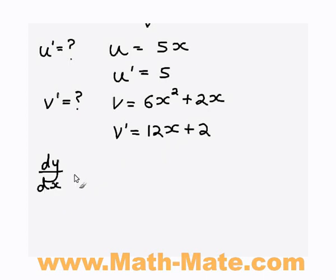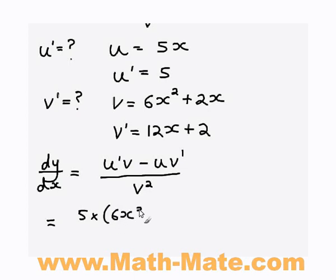So now we can go back to our original Quotient Rule, which is dy/dx equals u dash v minus u v dash on v squared. So we know u, we know v, and now we know u dash and we know v dash. So u dash is just 5, v is 6x squared plus 2x. Now remember it's a minus here, so minus u, u is 5x and v dash which is 12x plus 2. Make sure you put this in brackets because you're multiplying the 12x and the 2 by 5x.